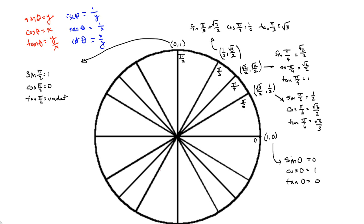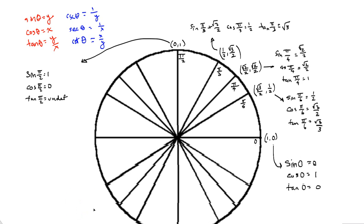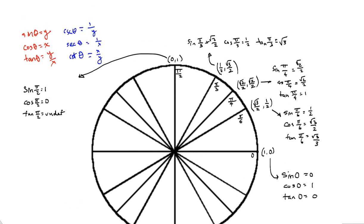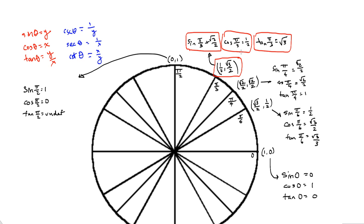Let's take a look at π/3. The sine of π/3 is the y-coordinate, which is √3/2. The cosine of π/3 is the x-coordinate, which is 1/2. And the tangent of π/3 is √3/2 over 1/2, which comes out to be √3.